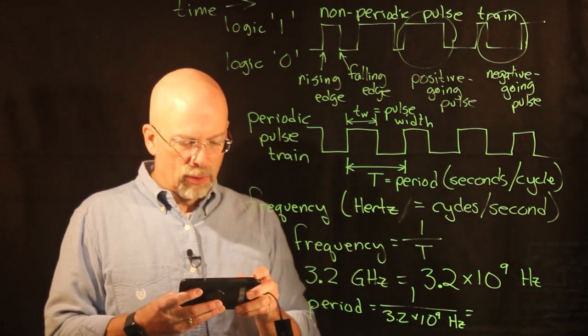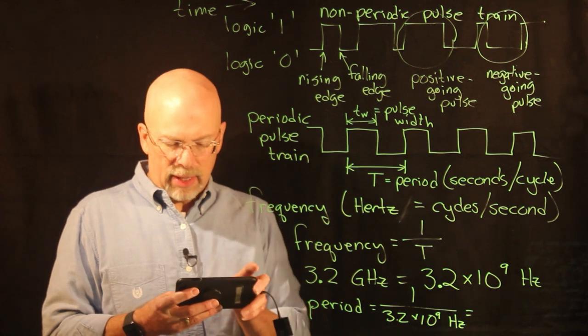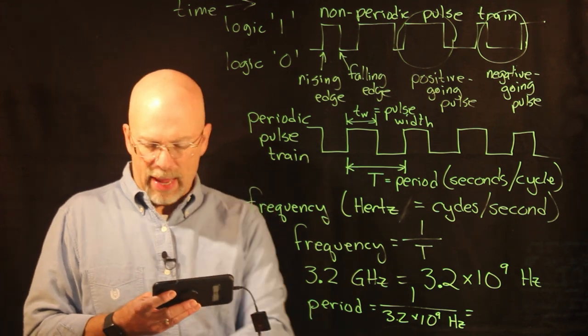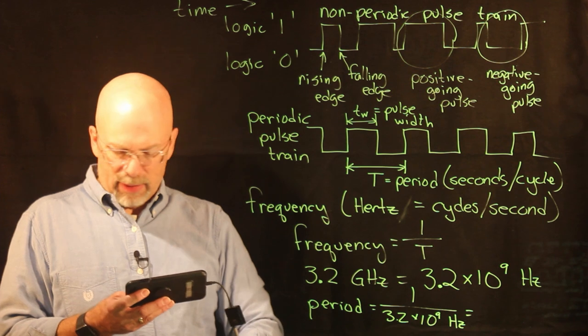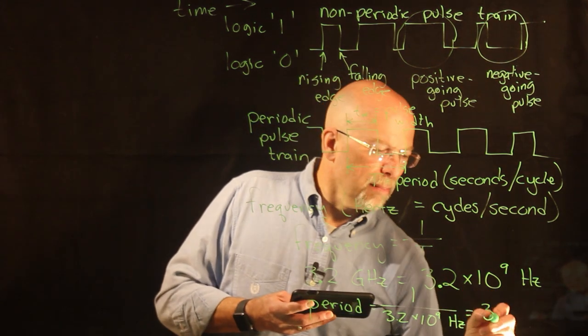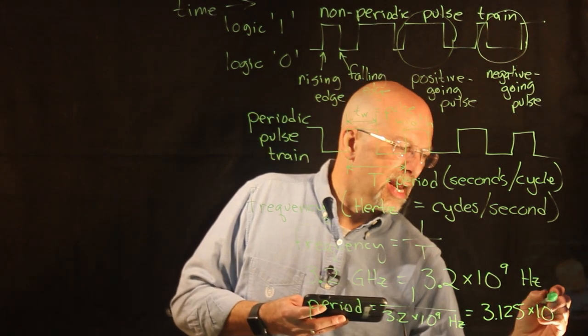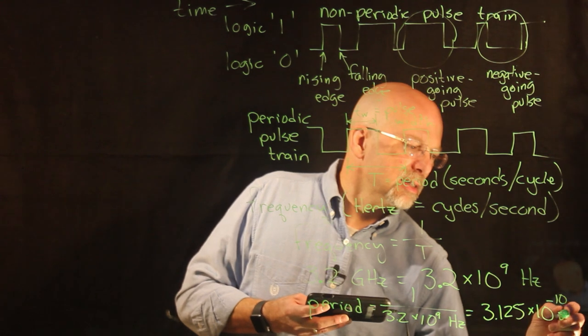So we do 3.2 times 10 to the 9th, and then we invert that, and we get this horrible number: 3.125 times 10 to the negative 10th seconds.